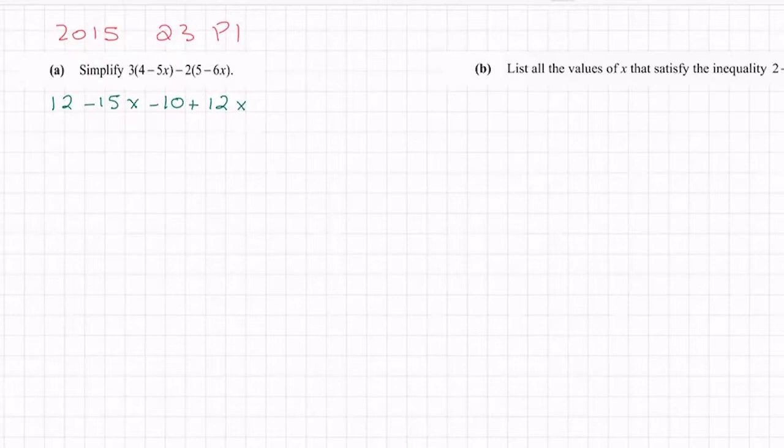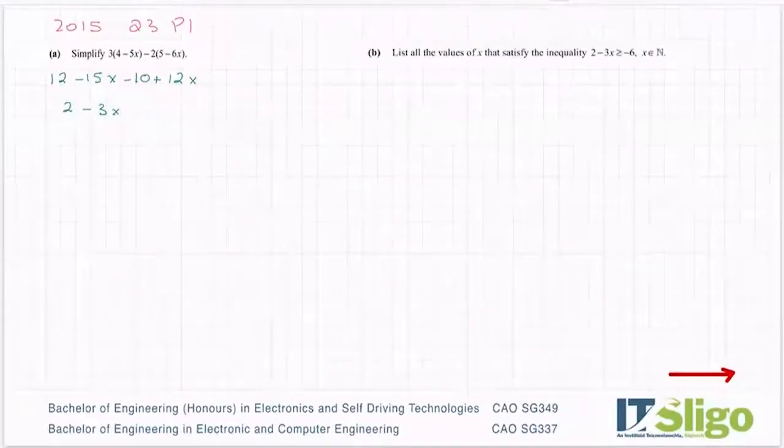So a couple of small things there. I was done multiplying by 3 when the bracket closed, and then be careful that you do that minus by this minus to give you the plus. So there are two common mistakes. And then we tidy up, so numbers with numbers and x terms with x terms, so 12 minus 10 is 2, minus 15x plus 12x is minus 3x. That's that part done. That was a nice little question there.